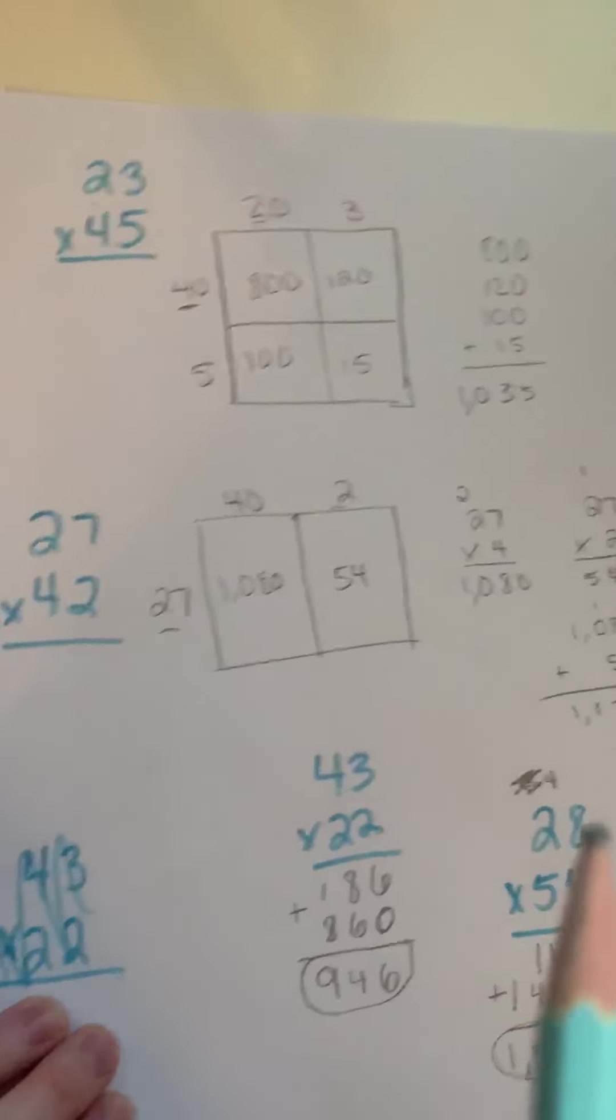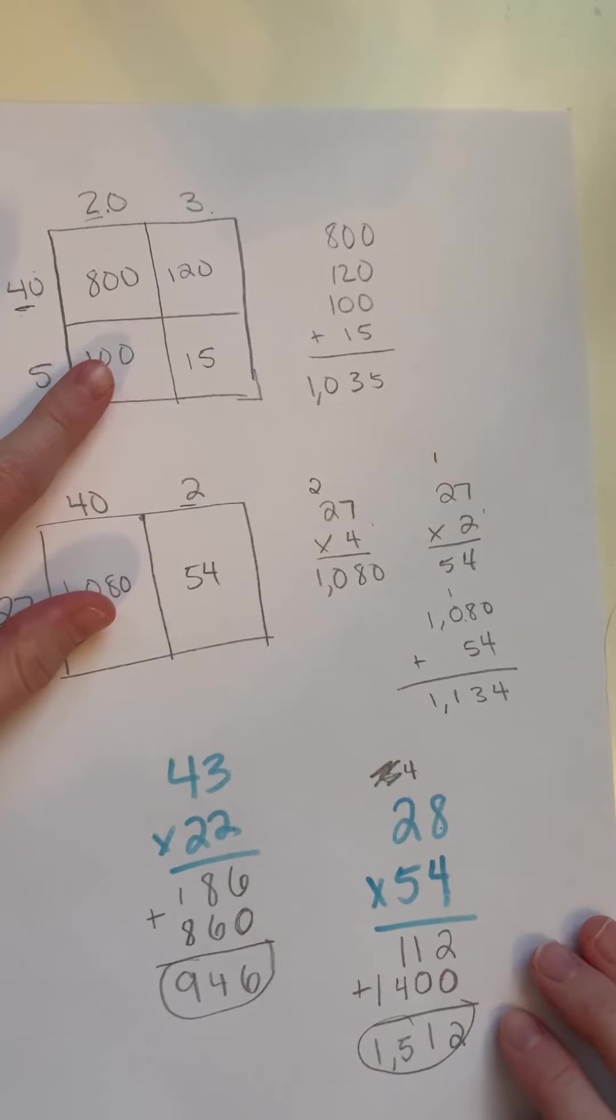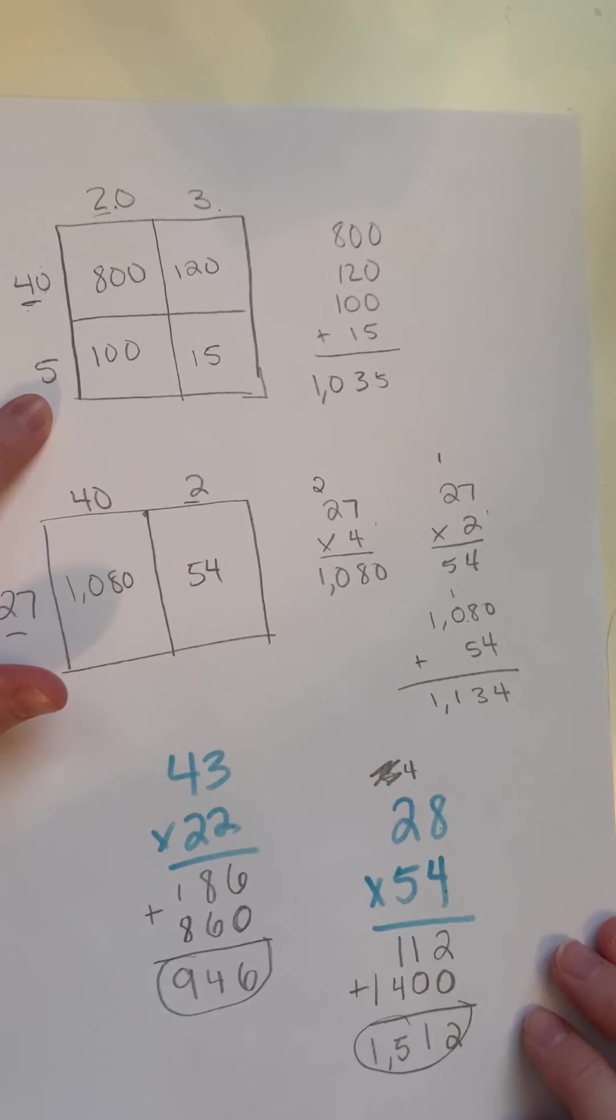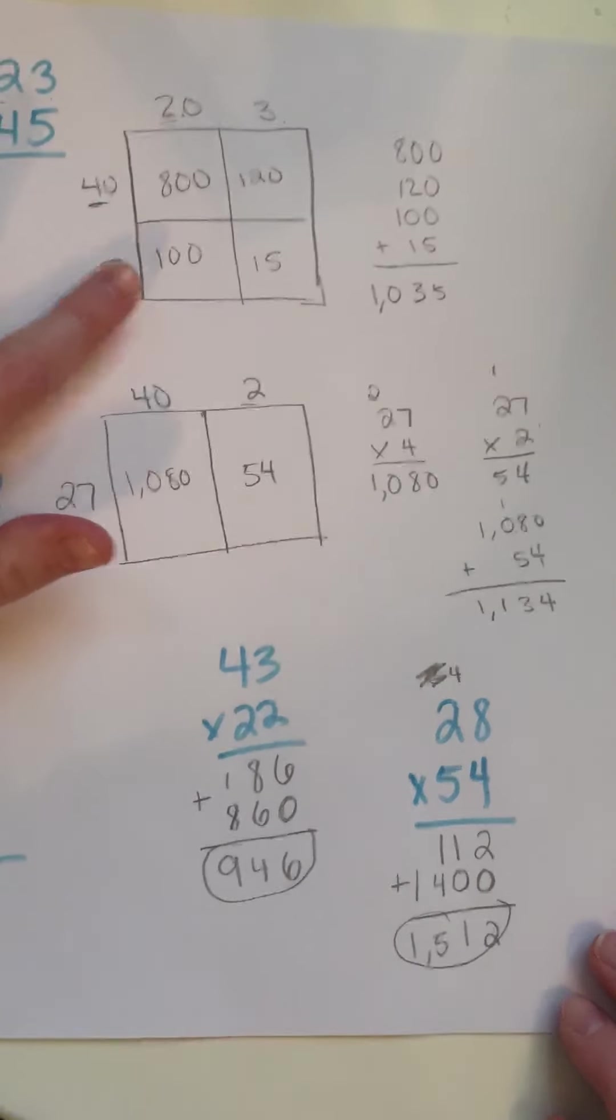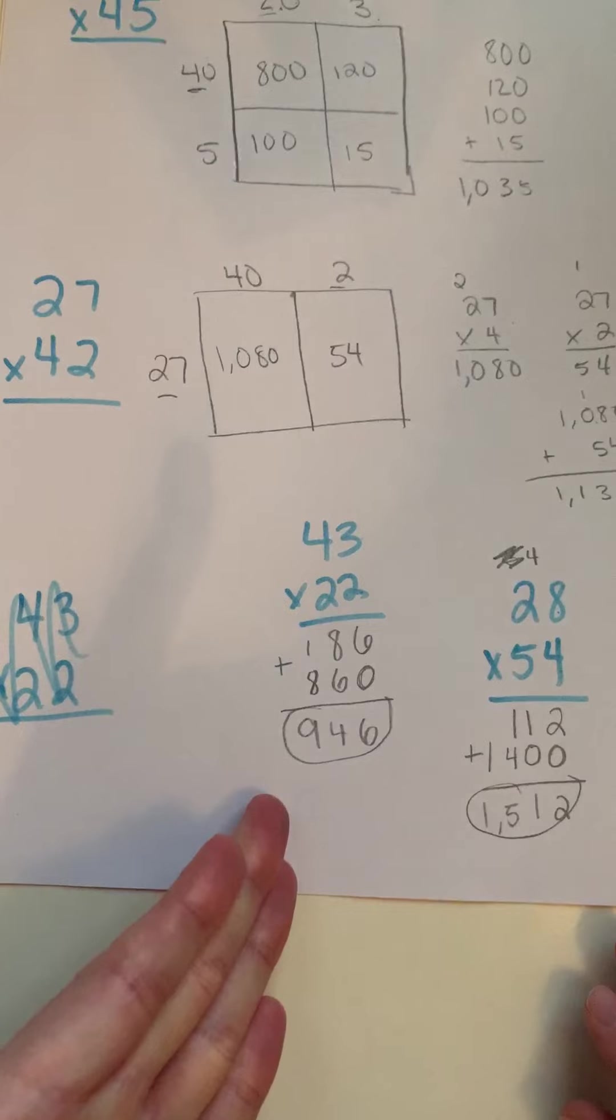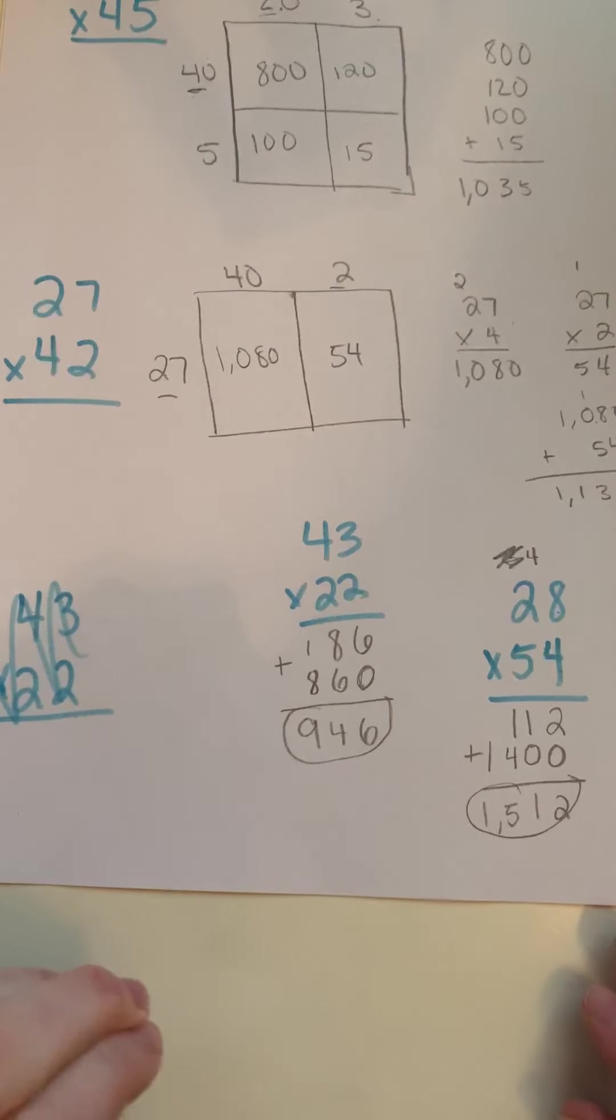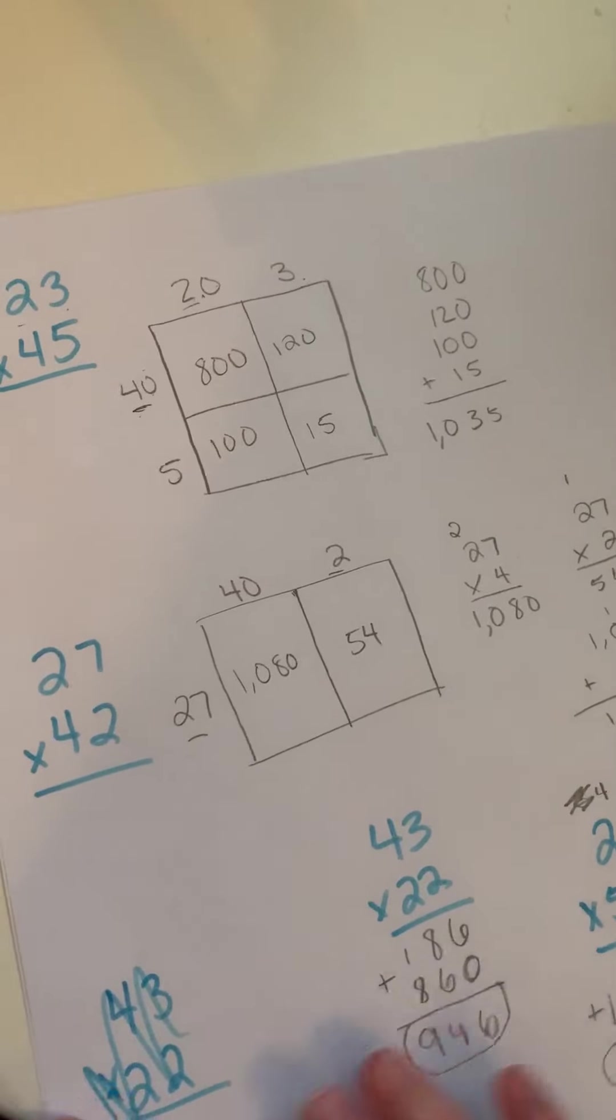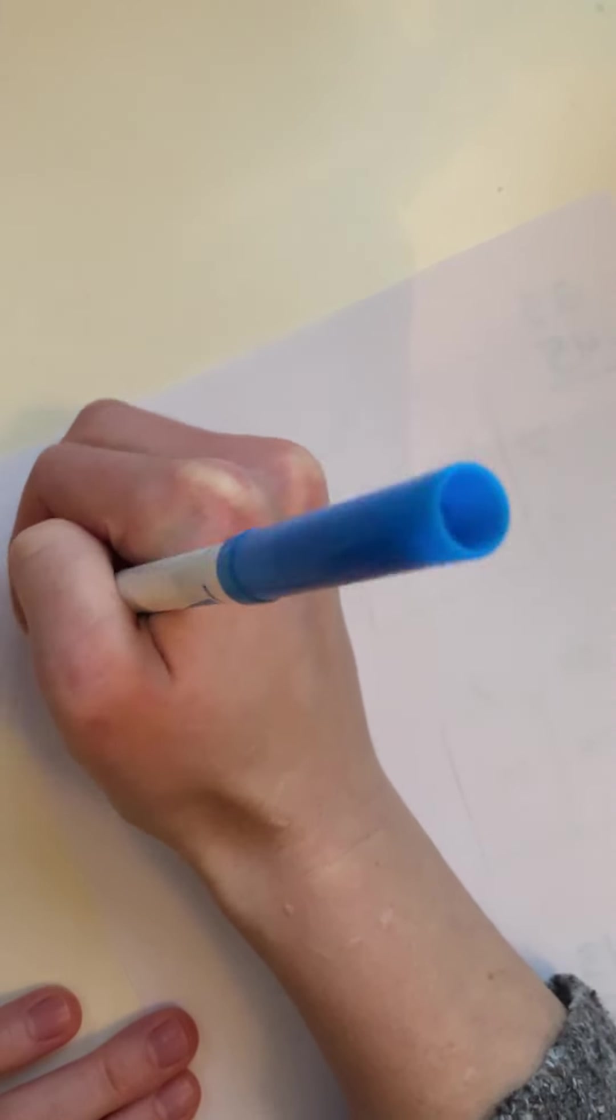So there's three methods here that you can use. I have this partial products method where I'm making my boxes, my area model, and I'm breaking down each number. This partial products area model where I'm just breaking down one number. Or a traditional algorithm method. Any of these three methods is fine with me for you to use. So thinking about that, I'm going to give you a problem. And I want you to solve it in the way that you are more comfortable with. So let's take 37 times 43. Go ahead and solve that problem on your own in any way that is comfortable for you.